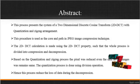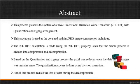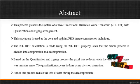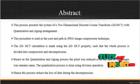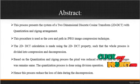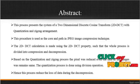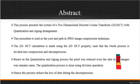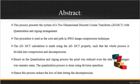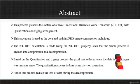Now we are going to discuss about the abstract for the process. This process presents the system of a two-dimensional discrete cosine transform — the 2D DCT — with quantization and zig-zag arrangements. This procedure is used as the core path in JPEG image compression techniques. The 2D DCT calculation uses the 2D DCT property such that the whole process is divided into two basic component structures: compression and decompression. Based on the quantization and zig-zag process, the pixel count was reduced while the data in the images remains the same.